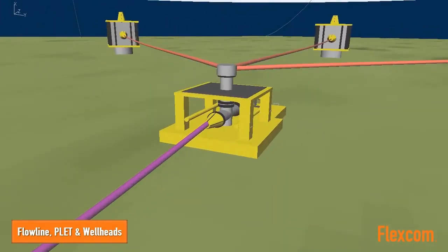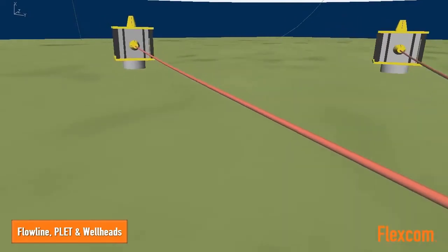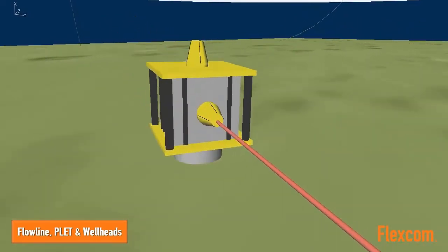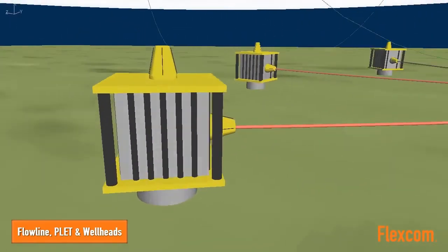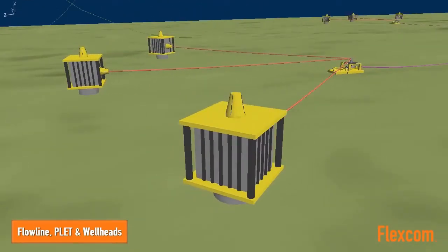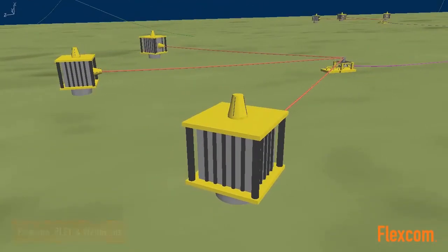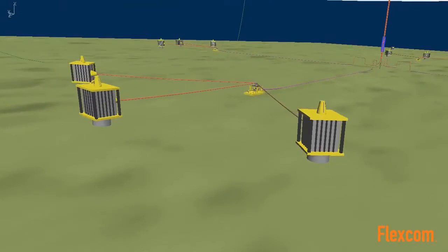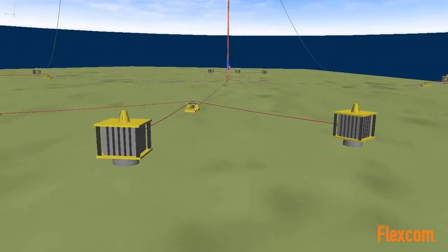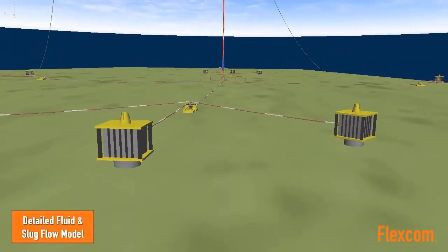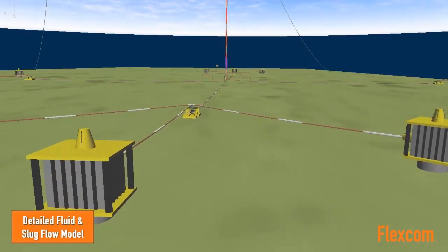Internal fluid flow can be a critical issue for flow line and spool design. FlexCom has a detailed flow model catering for centrifugal, coriolis and dynamic pressure effects. The internal fluid contents such as density and velocity may also vary over time in order to accurately simulate intermittent slug flow.